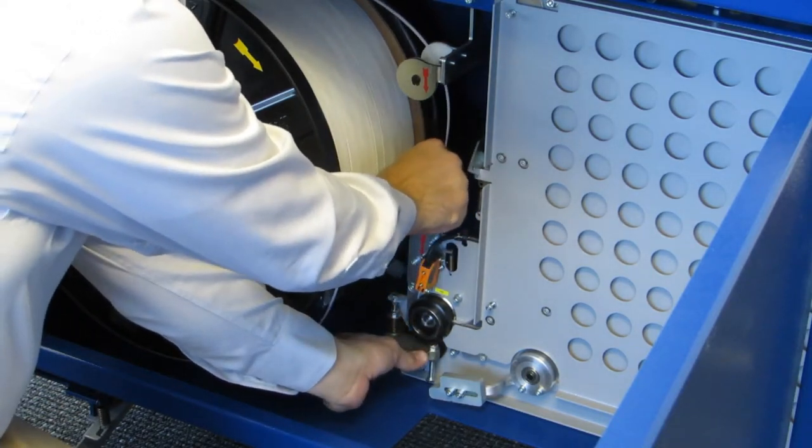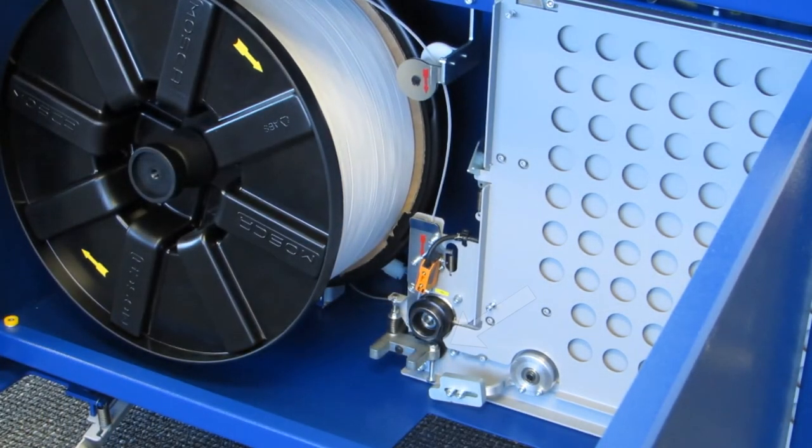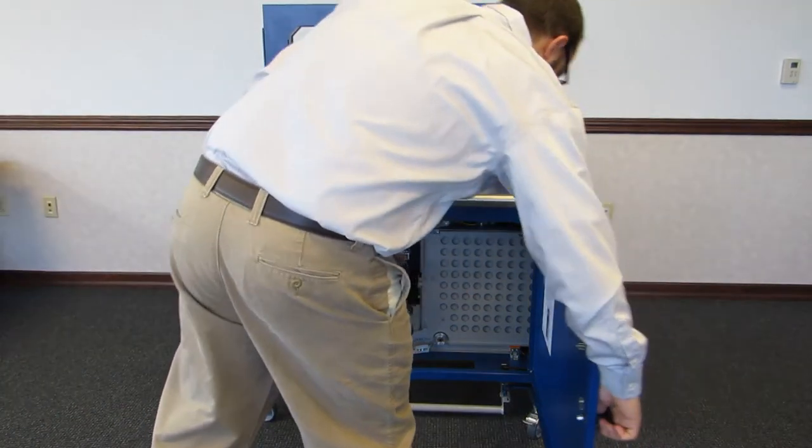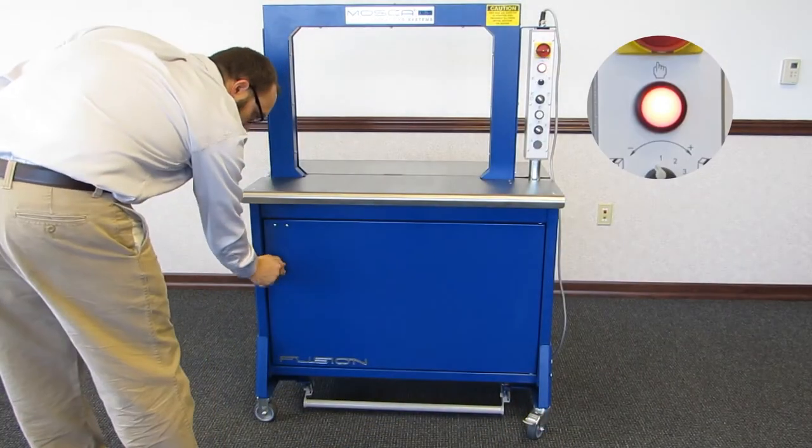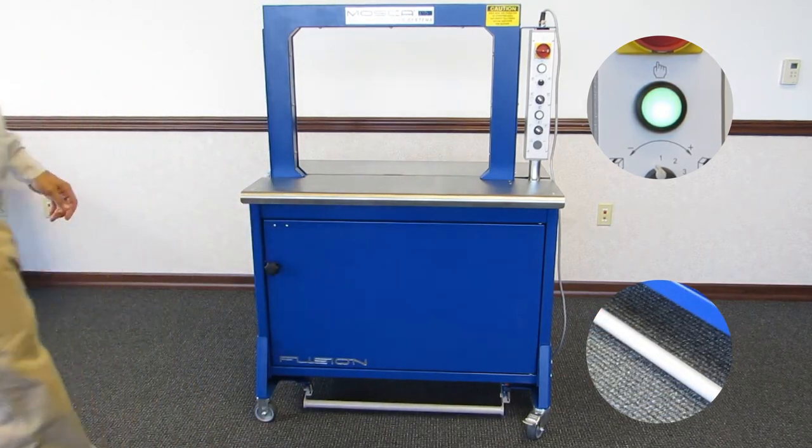Next, pivot the pressure roller assembly down while pushing approximately four more inches of strap into the feed area. Close the front door and step on the foot bar to thread the strap into the machine. If threading is complete, the indicator light will turn to solid green indicating the machine is ready to strap.